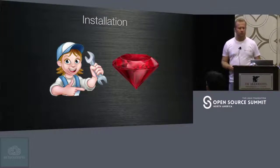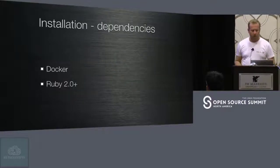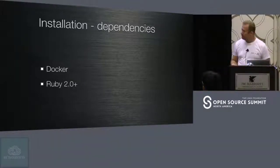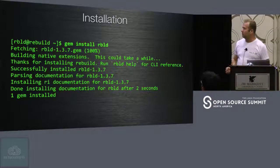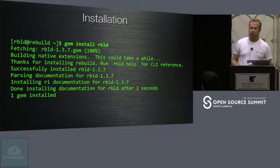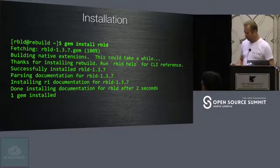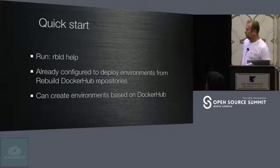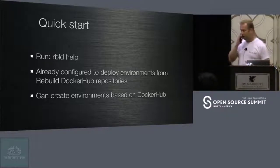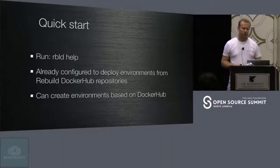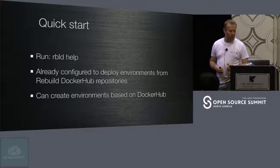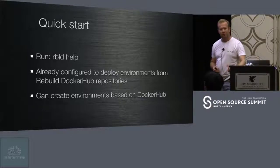Let's talk about installation of rebuild. Rebuild is actually a Ruby gem. The dependencies are Docker and Ruby 2.0 or higher. After you install Ruby, you just run gem install rebuild and it deploys everything needed to use rebuild in your environment. After installation, you can run rebuild help to understand what to do. We have already configured rebuild to work with Docker Hub, and we've put environments for popular platforms there, with more being added. So the moment you deploy rebuild, you can already deploy environments and compile your code.